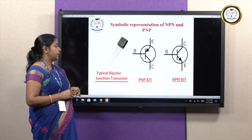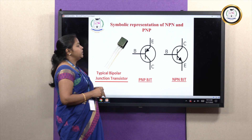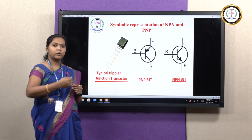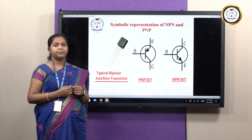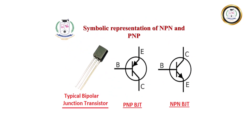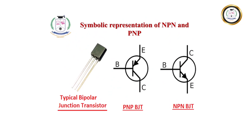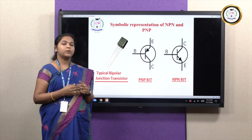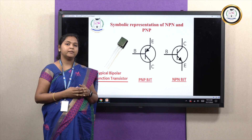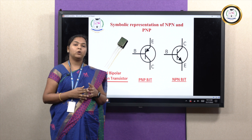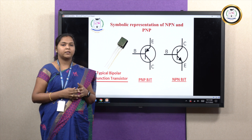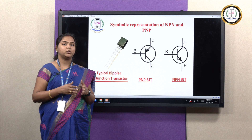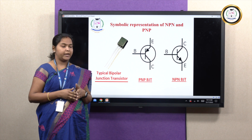This is the symbolic representation displaying both NPN as well as PNP transistors. In a PNP transistor, you can see that the arrowhead is flowing towards the transistor, whereas in the case of an NPN transistor, the arrowhead comes out from the transistor. As mentioned earlier, the arrowhead describes the flow of conventional current, which always moves from the P region towards the N region.